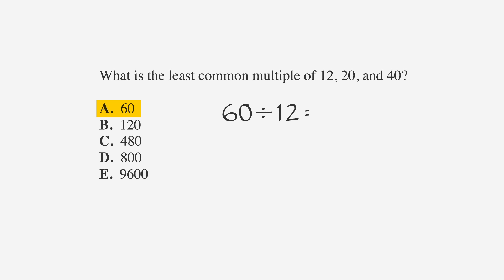We see that 60 divided by 12 is 5, and 60 divided by 20 is 3, but 60 divided by 40 is 1.5. If we need a decimal, it's not a multiple. A is incorrect. Cross her out.